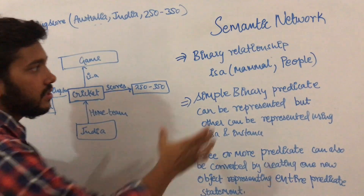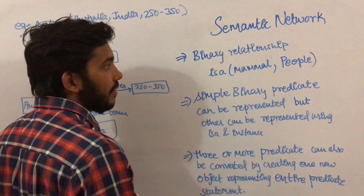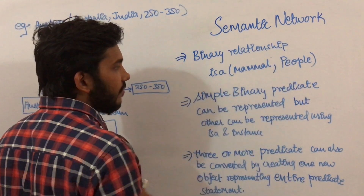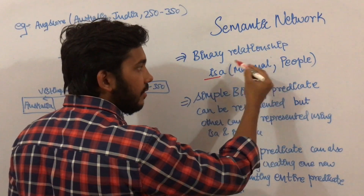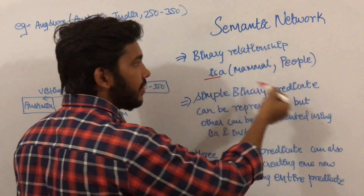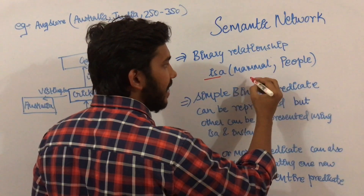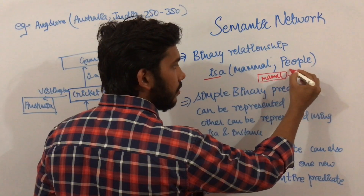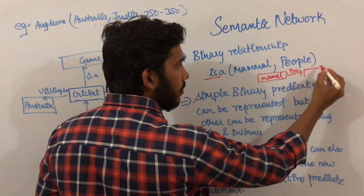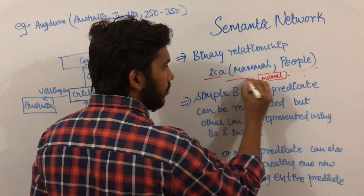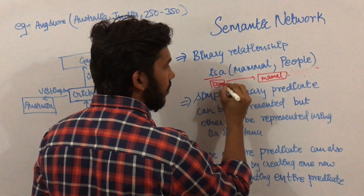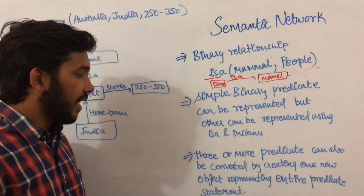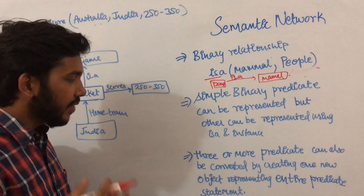If we have a simple binary relationship or simple binary inheritance relationship, then we can easily represent it using is-a. In brackets we can write this — for example, in a semantic network, mammal is-a, or we can say pupil is-a mammal.